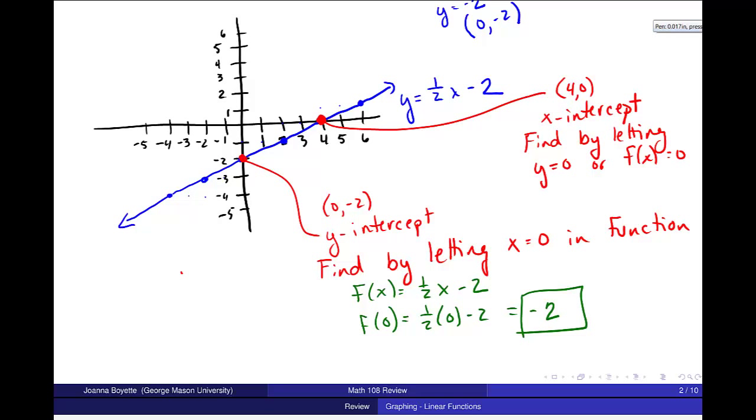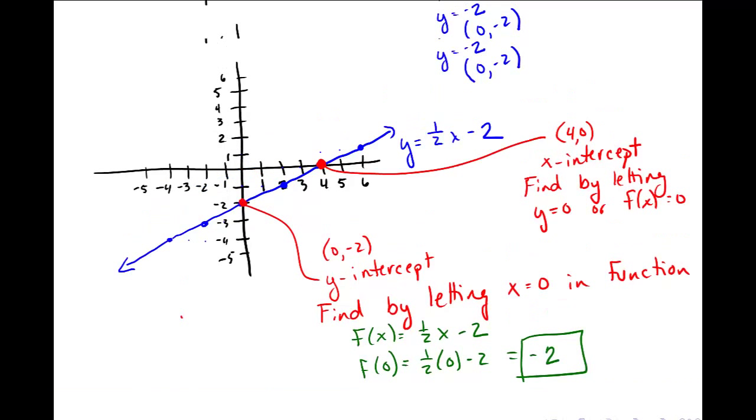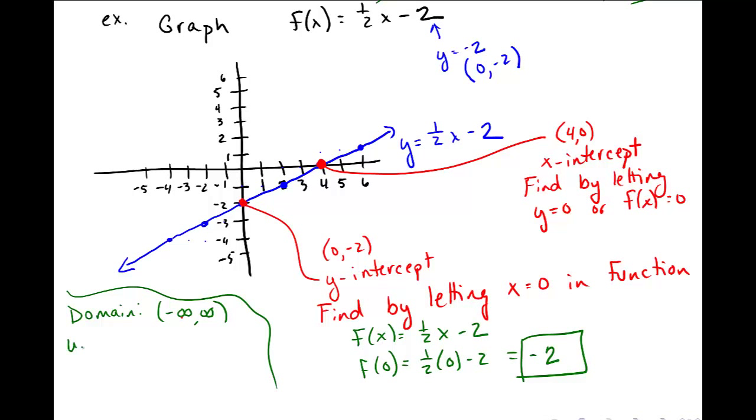The other thing I want to maybe talk about real quickly is domain and range from this graph. Valid inputs and outputs. For linear functions, and for all polynomial functions, domain should be minus infinity to infinity. There's no problem plugging in any real number in there. And for linear functions where the slope isn't 0, the range is also minus infinity to infinity. You can kind of see that in this graph, that this line will continue to go down in the left direction and up in the right direction and should eventually hit any real number that we want.